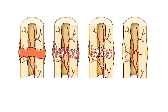Bone healing occurs in several stages over a period of several weeks to months, depending on the severity and location of the fracture. The main steps include inflammation, where immune system cells release cytokines that attract white blood cells to the area to remove damaged tissue and prepare the site for new bone growth.